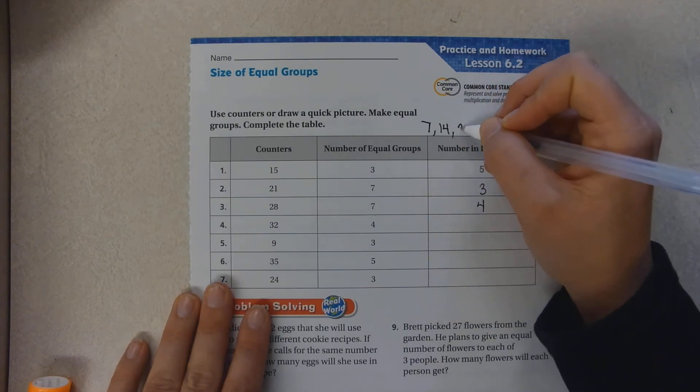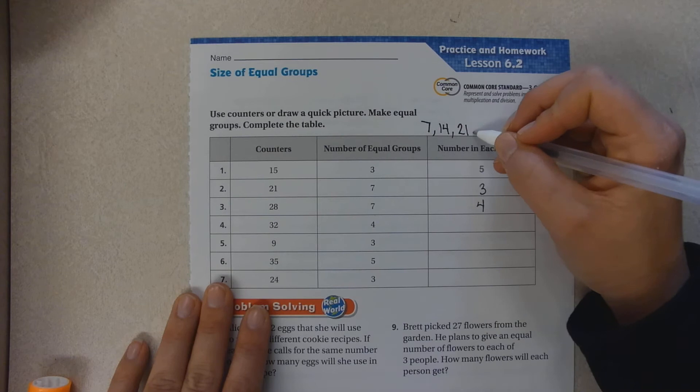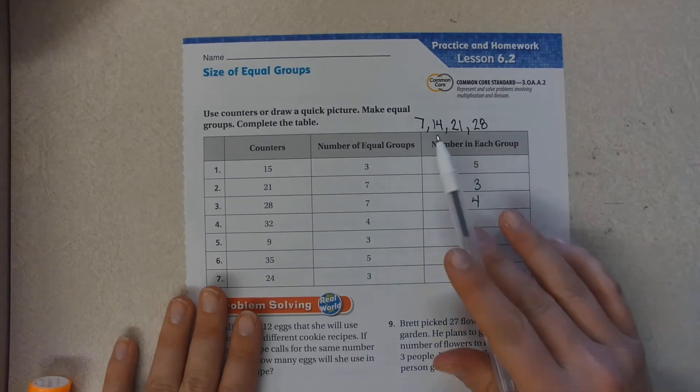14 plus seven is 21. 21 plus seven is 28. I can just add up.